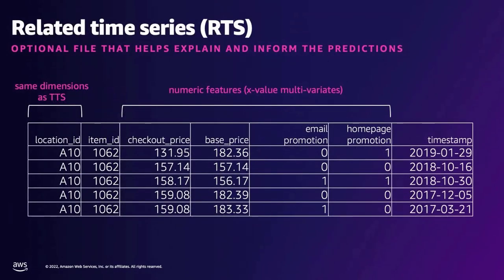Next is related time series — data that should have some correlation with the target value, statistical strength that improves overall model accuracy. Common examples include price, promotions, or third-party datasets such as hyper-local events. Our advice is to first identify data that matters to your use case. You might already know what drives your sales or incidents higher or lower — what actions help drive up your target value, and what things drive it down. These ideas inform the information you bring to your related time series.